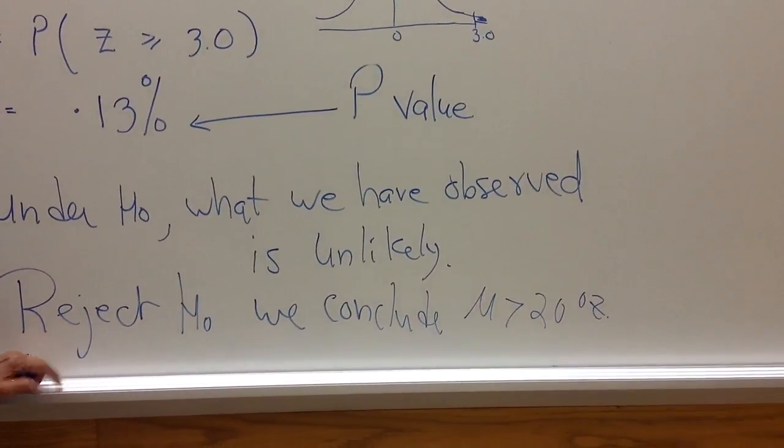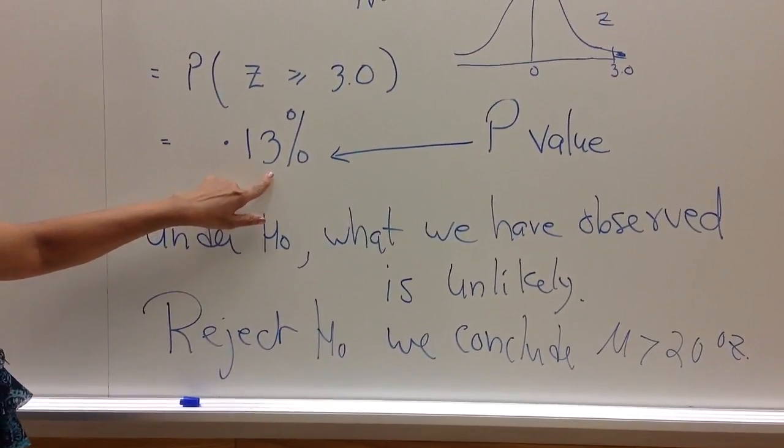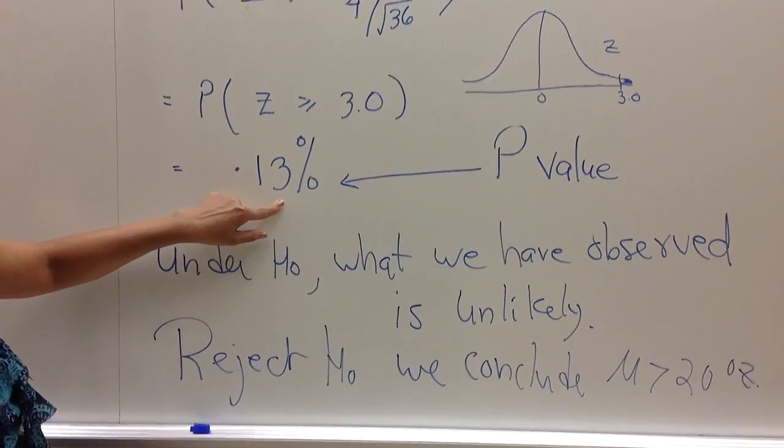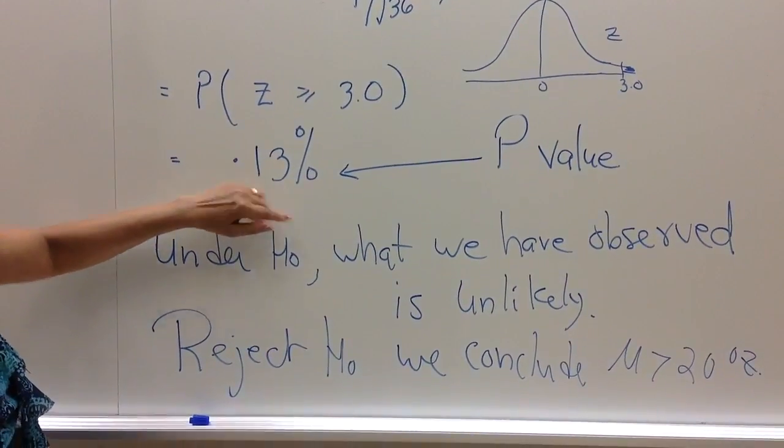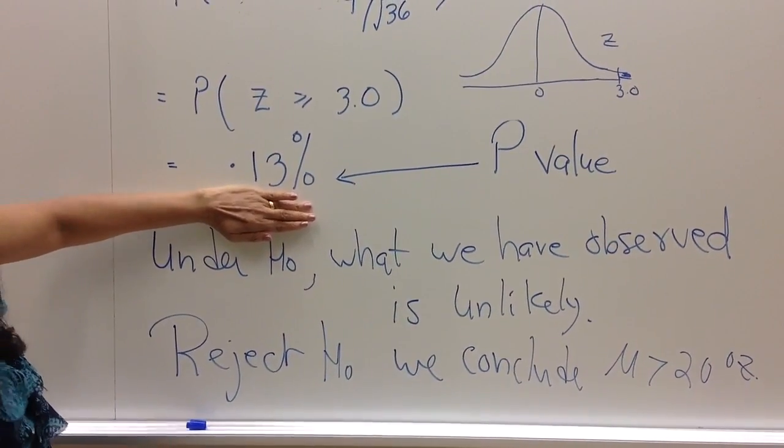So now the question is, well, our p-value or probability, which was 0.13%, how do we know it is low? Do we have a guideline?